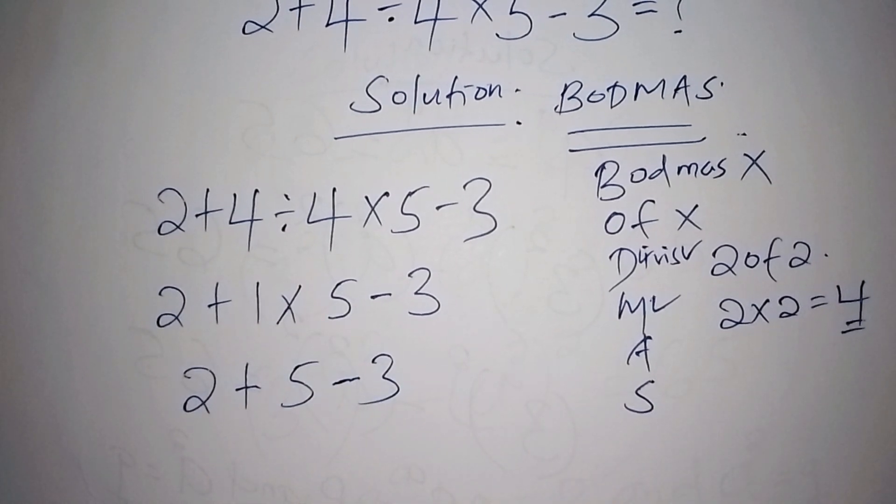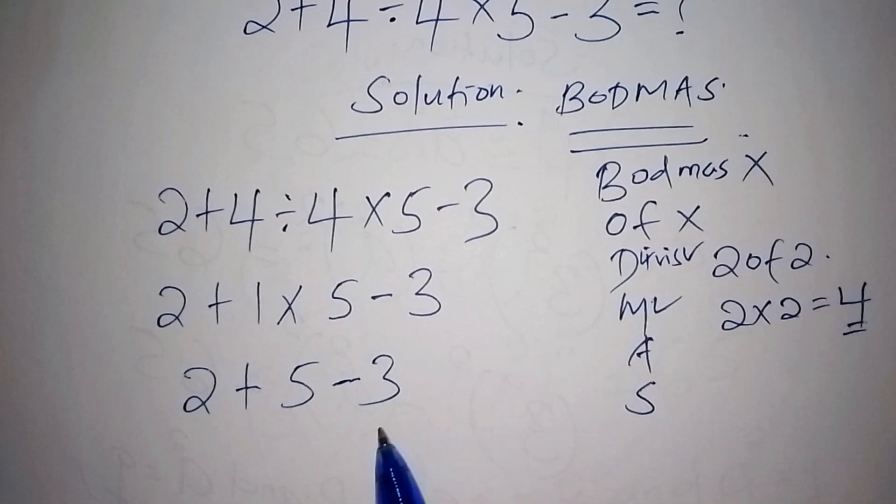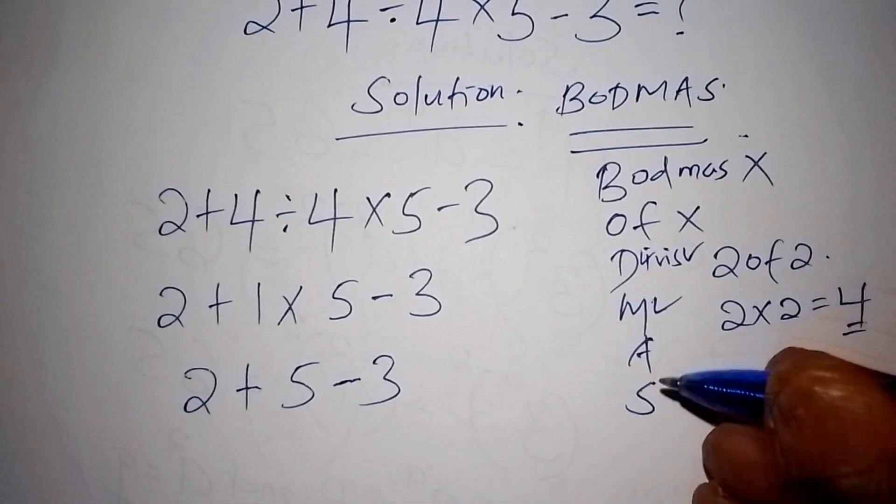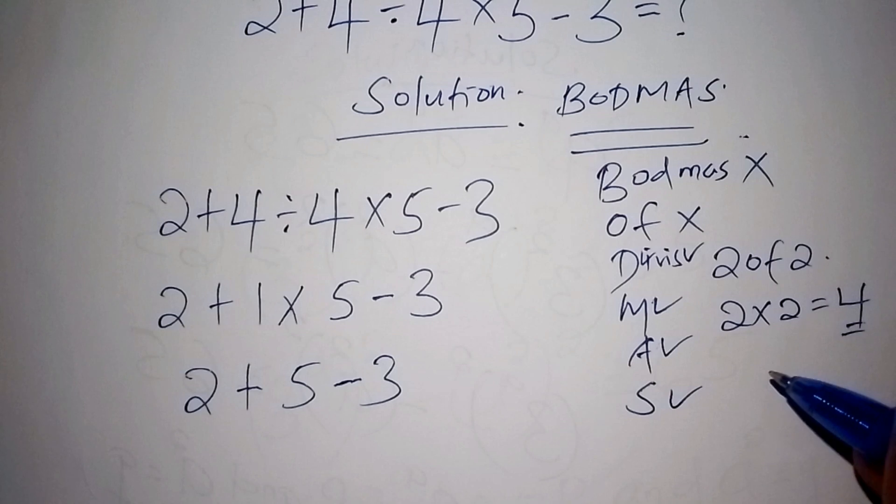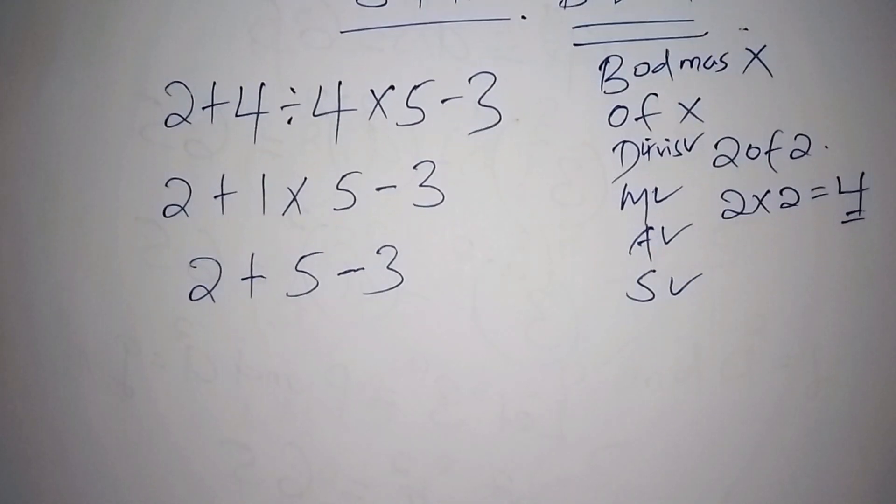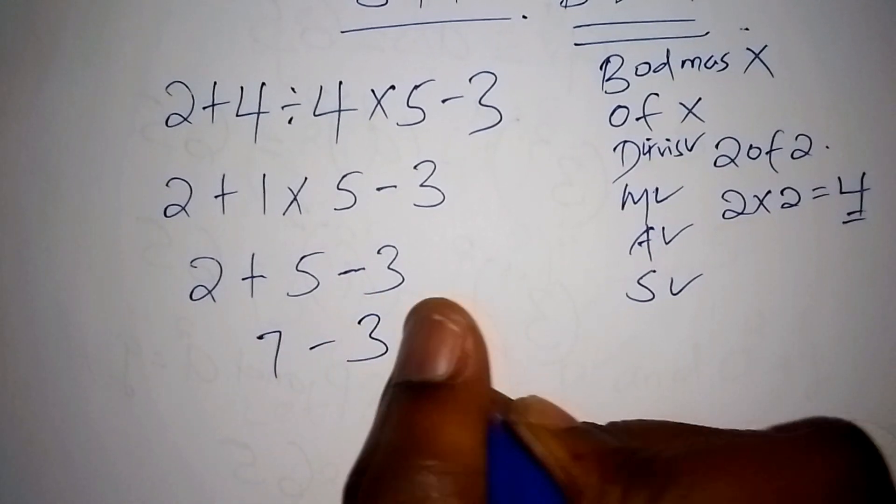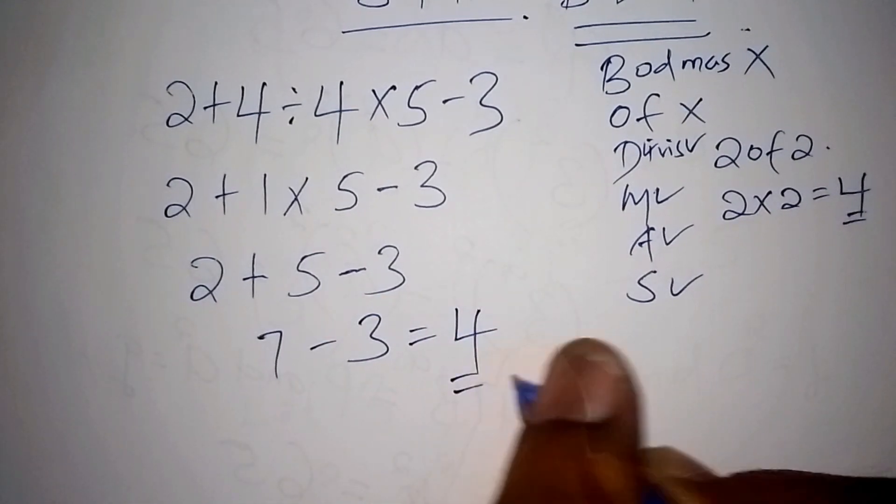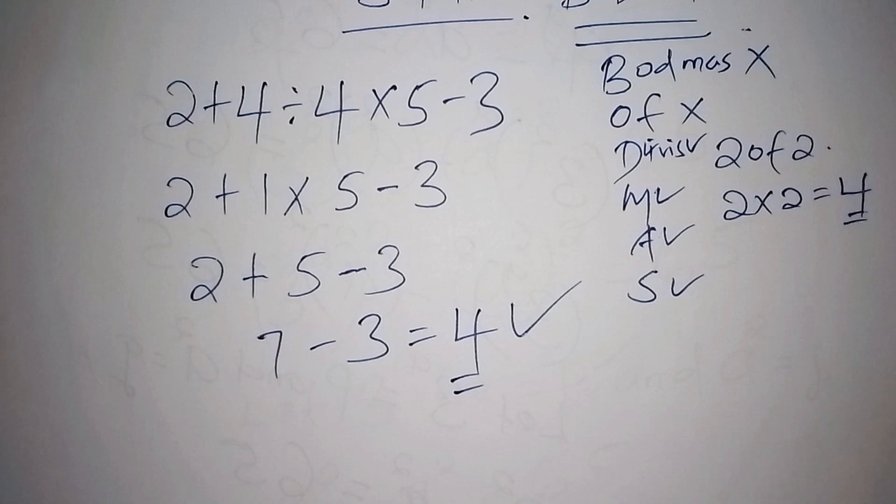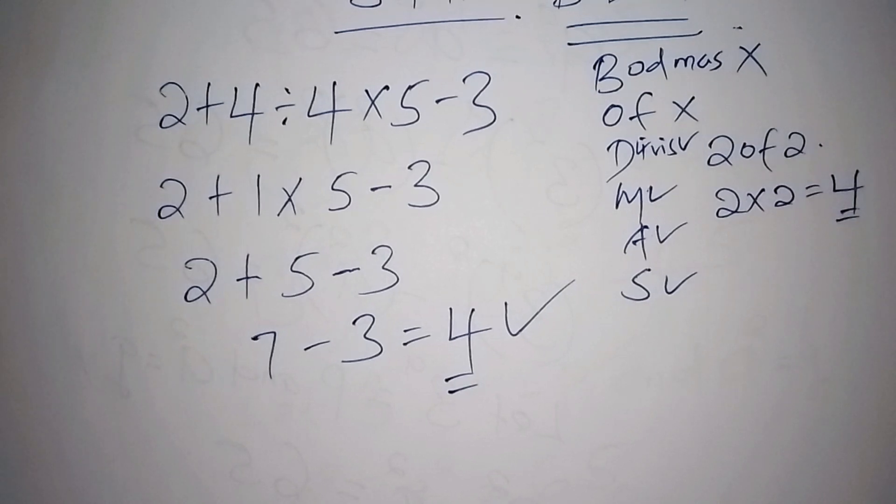So we need to have a serious order of working this maths problem. From there now, we are left with addition and subtraction. So let us now add 2 plus 5, we shall have 7, and 7 minus 3, and finally our correct answer shall be 4. So 4 stands to be the correct answer.